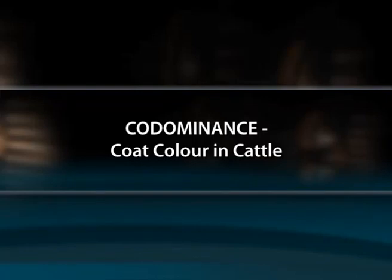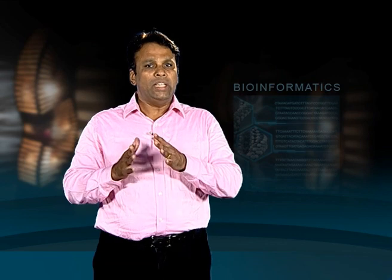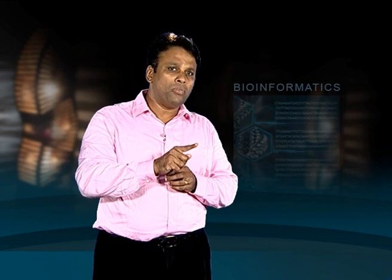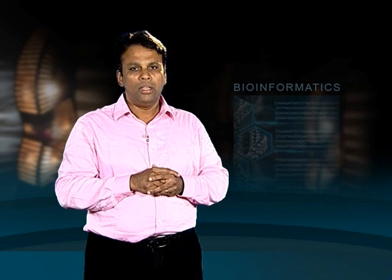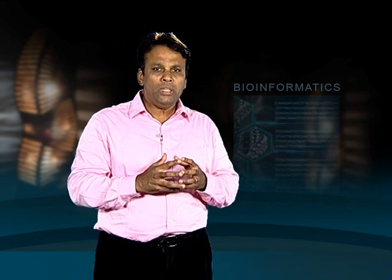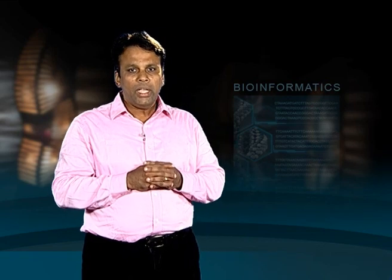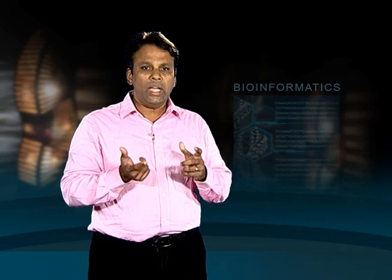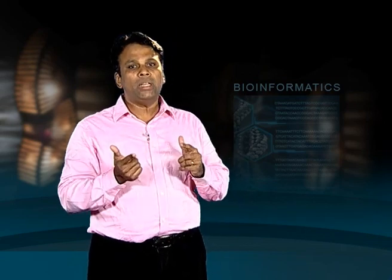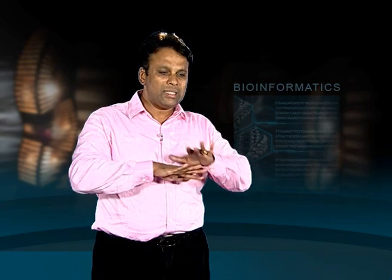Now let us go to the case of codominance, which we can very well represent with coat colour in cattle. There is another pattern of inheritance which is also an example of lack of dominance, or more than one pattern of dominance occurring under certain circumstances. Codominance is a relationship between two versions of a gene. Individuals receive one version of a gene, called an allele, from each parent. If the alleles are different, the dominant allele will usually be expressed, while the effect of the other allele, called recessive, is masked.